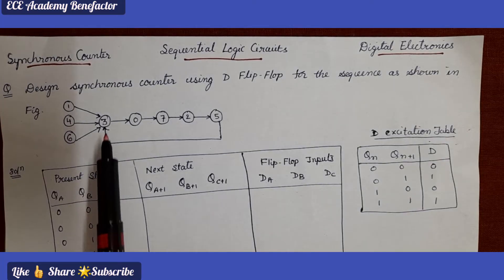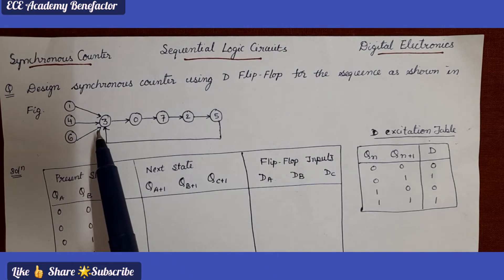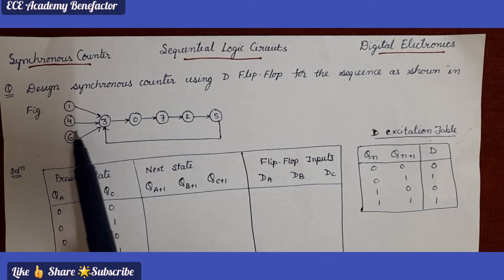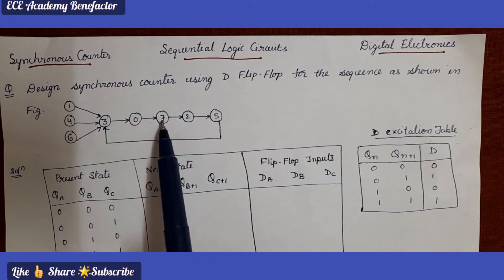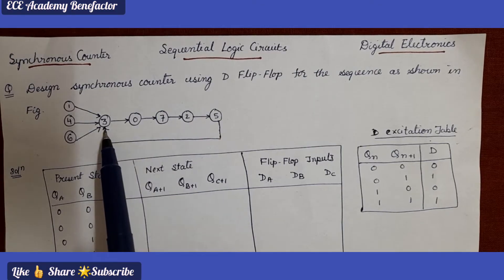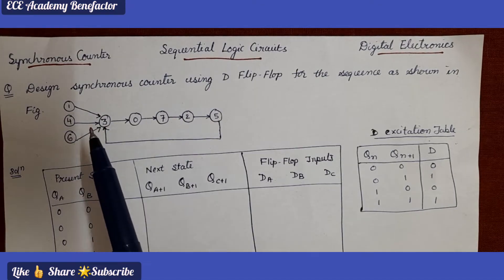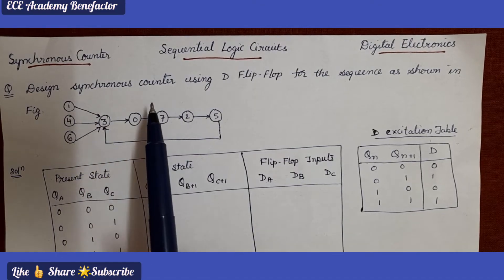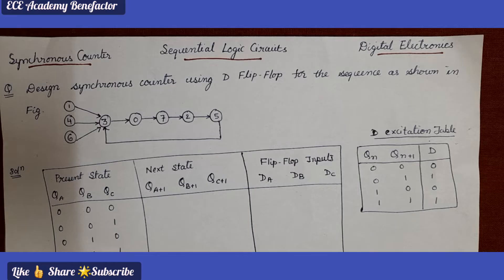The given problem is: design a synchronous counter using D flip flop for the sequence as shown. You can see this state diagram. The states are 1, 4, 6. After state 6 it is going to 3, after 3 it goes to 0, after 0 it goes to 7, after 7 to 2, after 2 to 5, and after 5 it goes back to 3. States 1, 4, and 6 are going to state number 3.